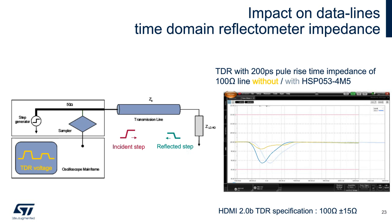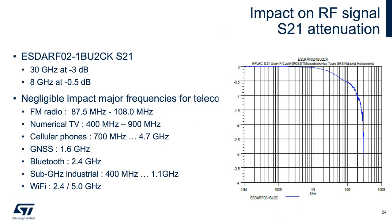For analog signals, the S21 parameter in dB is also reported on the data sheet — it corresponds to signal attenuation due to the protection. As an example, the SDA RF 021BU2CK can be used to protect antennas. It has a negligible impact on major frequencies used for wireless telecommunications.